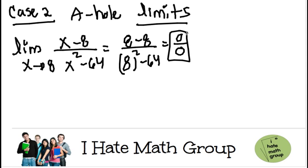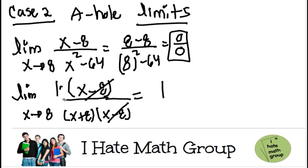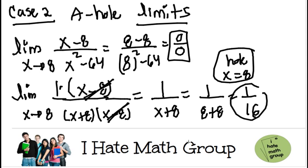When I plug it I get 0 over 0, but I'm going to go ahead and factor first and figure out if I can eliminate the discontinuity. I know that x squared minus 64 is (x plus 8)(x minus 8). On the top there's nothing I can do, but then (x minus 8) over (x minus 8) is just 1, leaving 1 over (x plus 8). I have a hole at x equals 8, but the limit when x approaches 8 is 1 over 16.